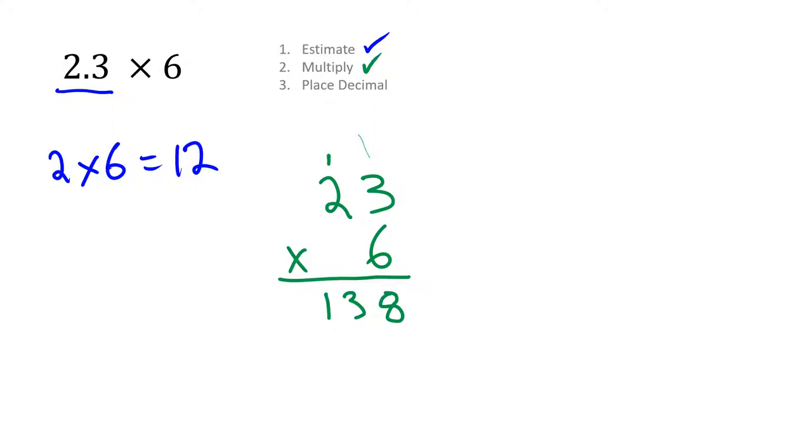Now we have to place our decimal. We do that by knowing our answer should be around 12. If I place my decimal at the very end, 138 is nowhere near 12. Now if I put it between the 3 and the 8, 13.8 is pretty close to 12. So there we go, we've multiplied these two decimals successfully.